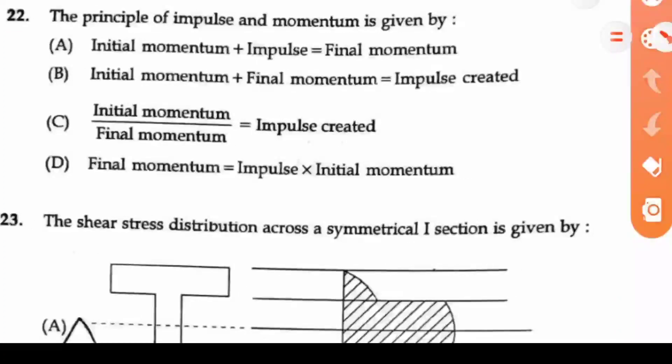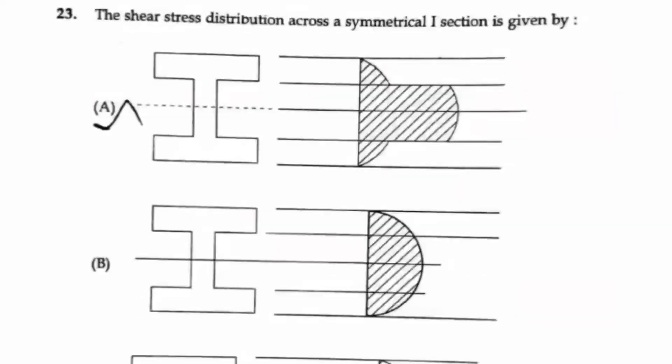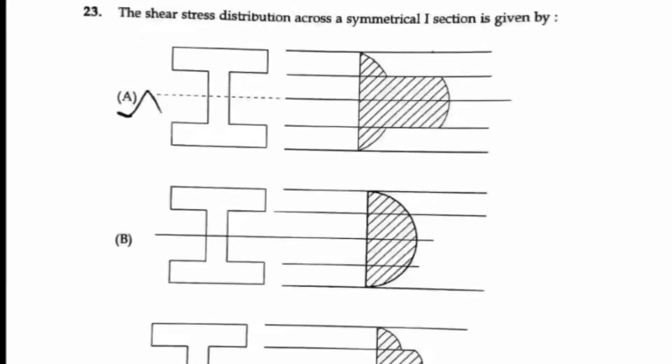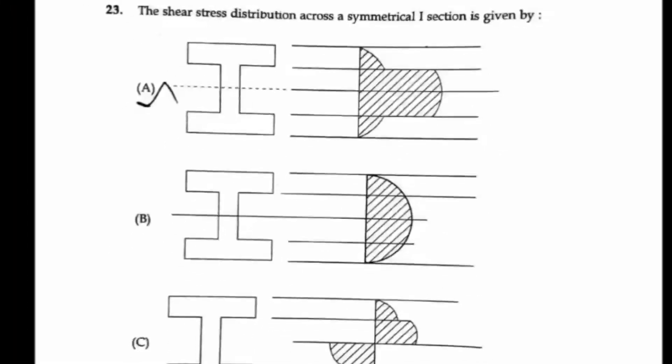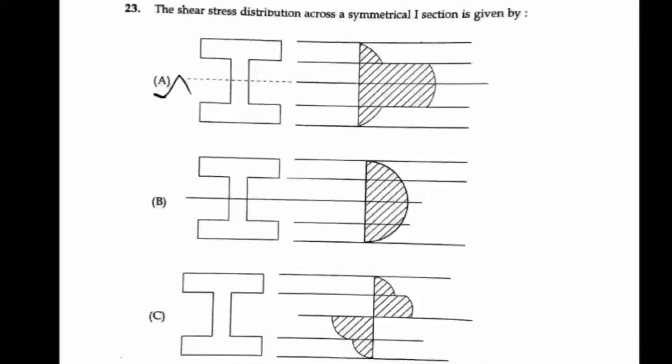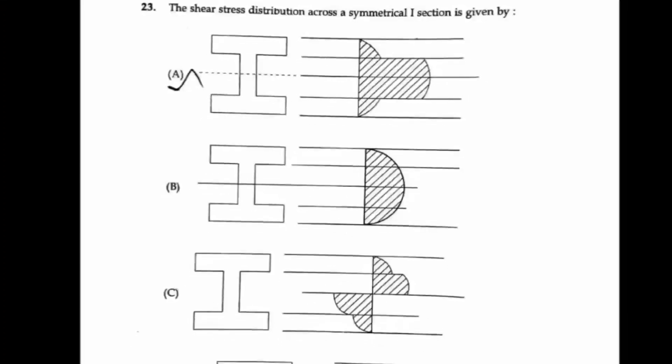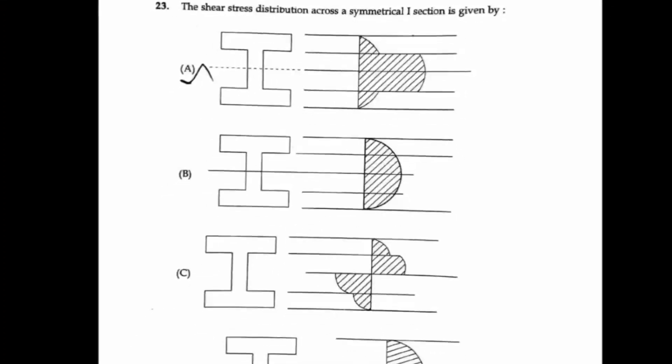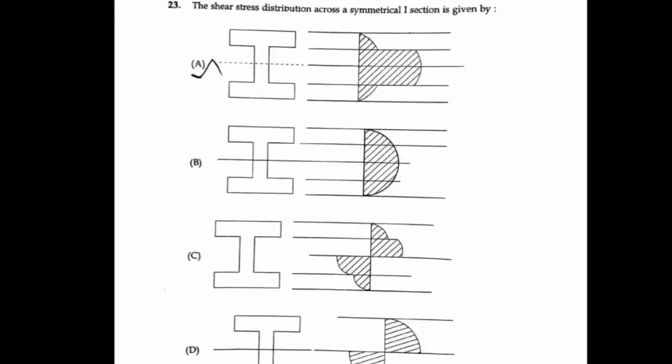Question 23: The shear stress distribution across a symmetrical I section is given by? Four various diagrams are given. From the diagrams itself, you can tell that option A is the right answer.